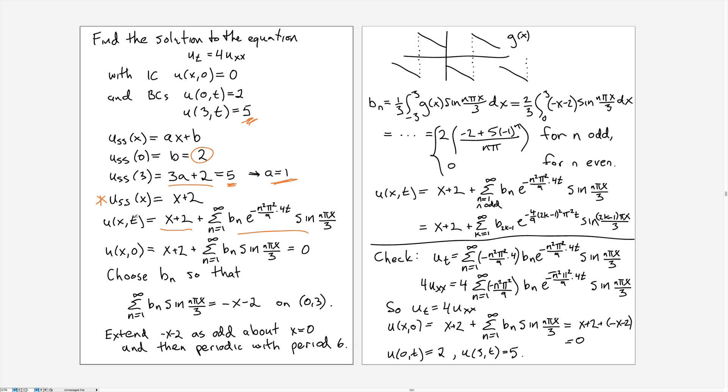Now when we plug in the initial condition, we plug in 0 here, the exponential disappears or becomes 1, and so we're left with x + 2 plus this whole sine series has to equal 0. And the question is, how do we choose the b values here so that this sum is correct?